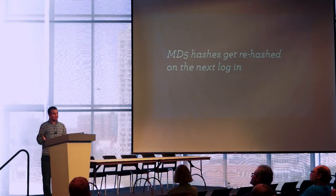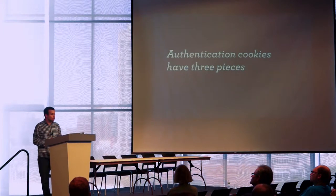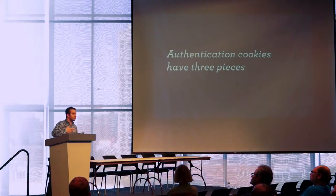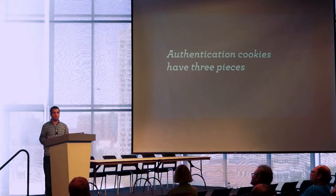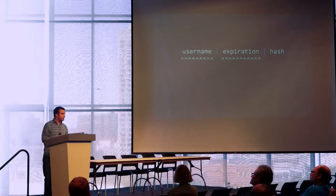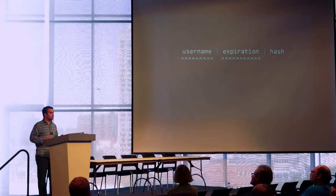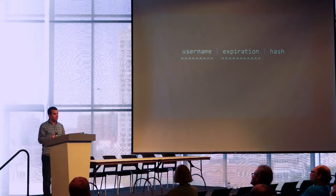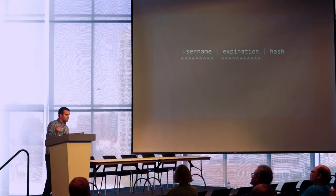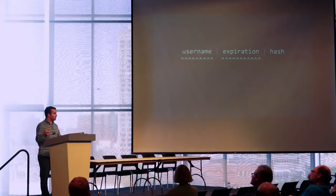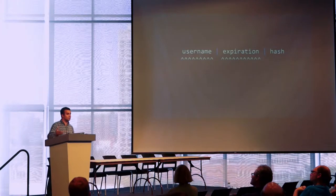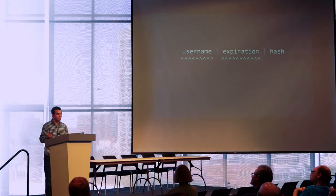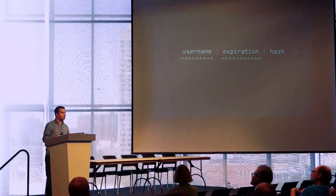Moving on to the next piece of the stack: authentication cookies. Authentication cookies have three pieces — this is pretty simple. If you've ever looked at your cookies, you've seen this before. Your username, like 'admin', and there's a little pipe. And then you see normally about 11 digits, which is going to be your Unix timestamp — the expiration of that cookie. And then you're also going to see a hash.